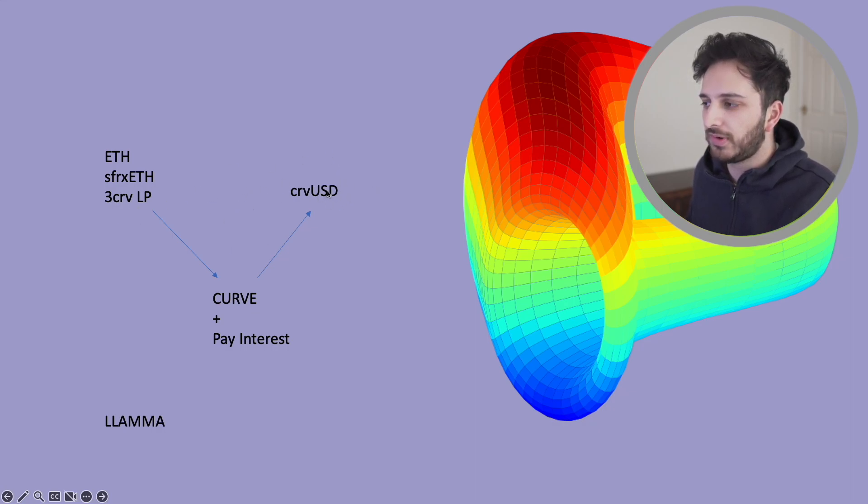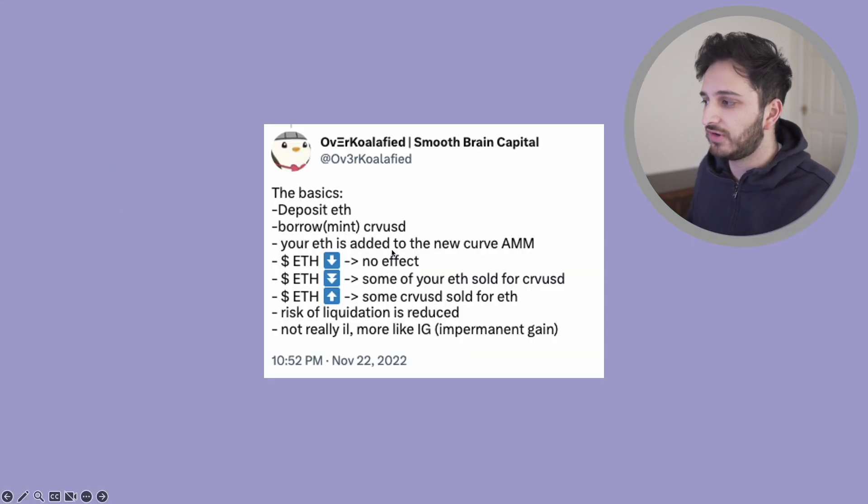Now, we'll talk about some of the flaws with the other models and why CRVUSD is much better. But essentially, when you do this, you pay interest. And what happens is that your ETH or your Staked Frax ETH or your collateral gets put on an AMM. And essentially, your ETH is added to this new Curve and there's certain things that can happen.